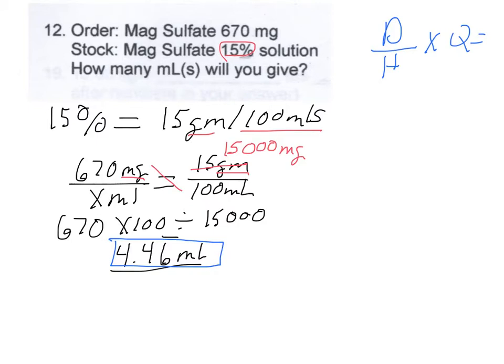So the D is what the doctor ordered. In this case the doctor ordered 670 milligrams. What you have in stock is a 15 percent solution, which we know is 15 grams per, and whenever you say per think times the 100 mLs, and that's your quantity.